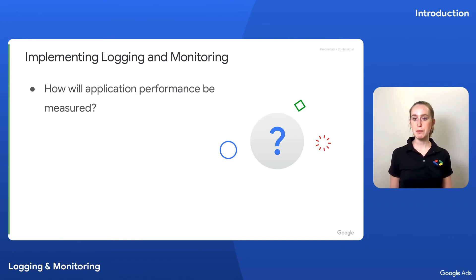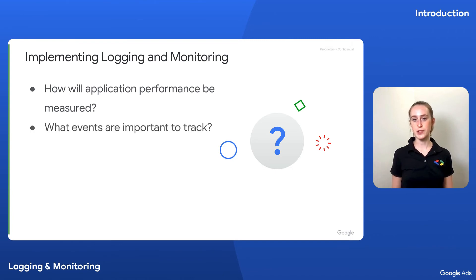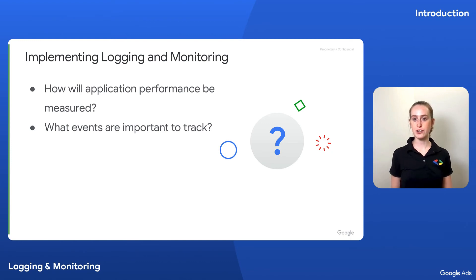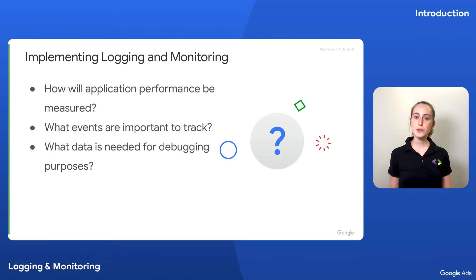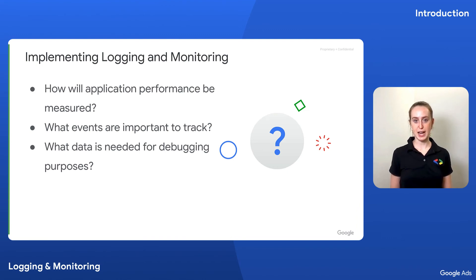First, how will application performance be measured? What performance indicators do you care about, and what metrics will you use to capture these? Next, what events are important to track? You don't want to find yourself looking to make decisions without the data you need to reason through them. For example, you might want to track interactions with a particular feature to understand how users are engaging with that feature and make improvements accordingly. On a similar note, consider what data is needed for debugging purposes. Most logging tools will allow you to specify a logging level, such as debug, info, etc. It's important to think about what baseline information you would like to capture and what additional information you might want for investigating bugs and incidents.